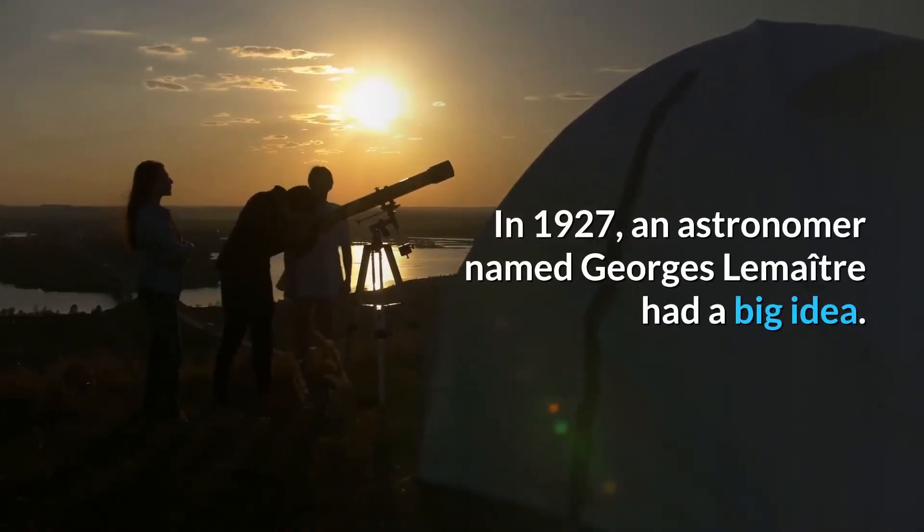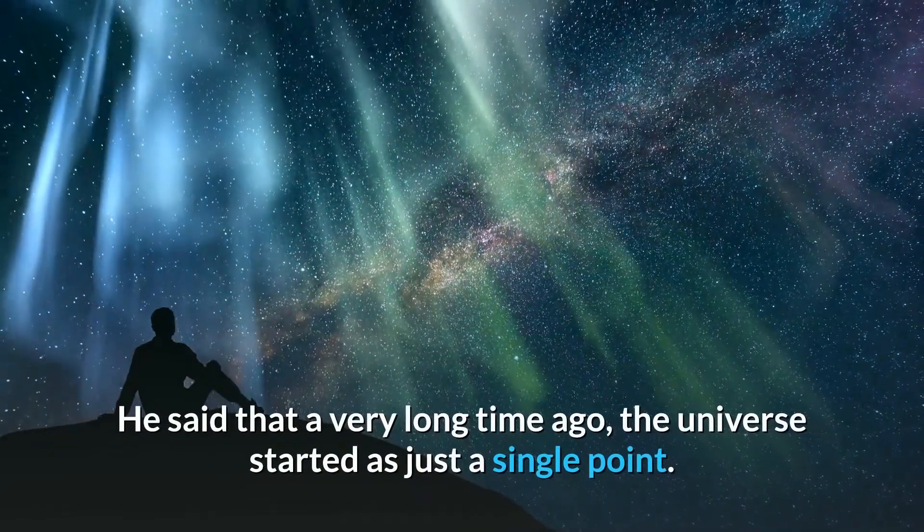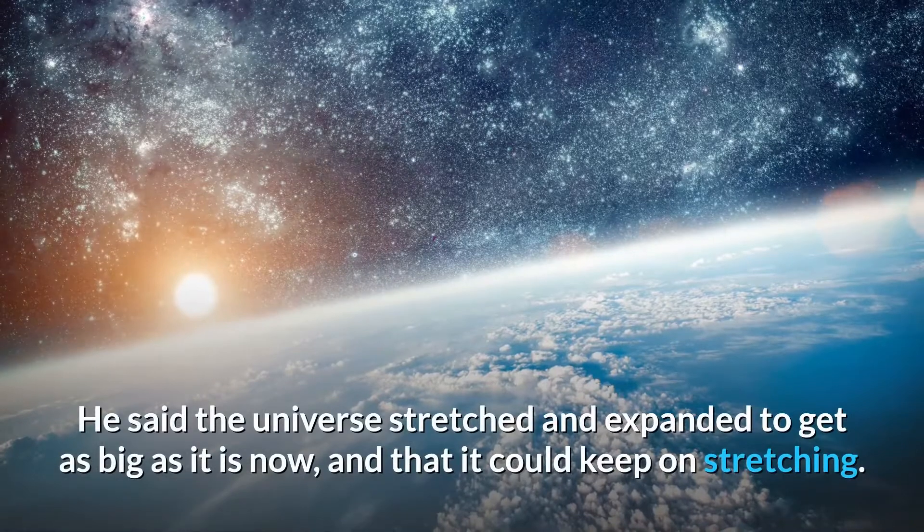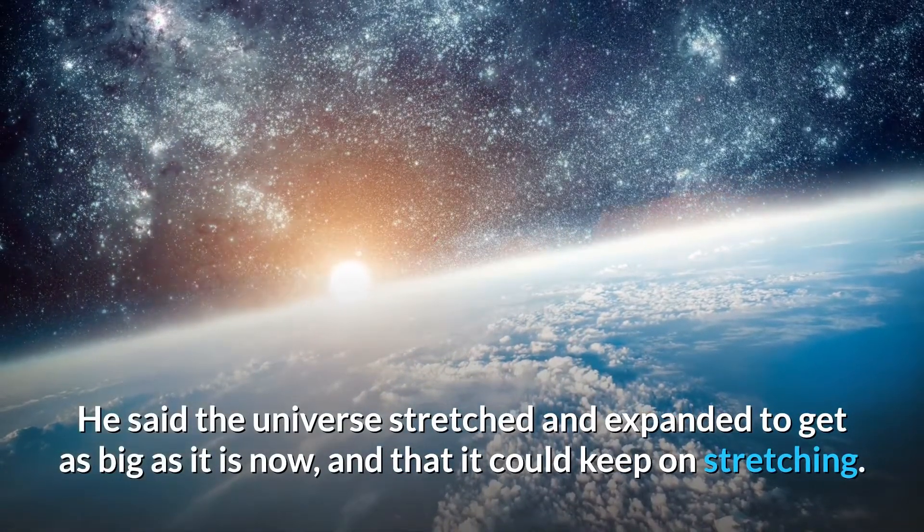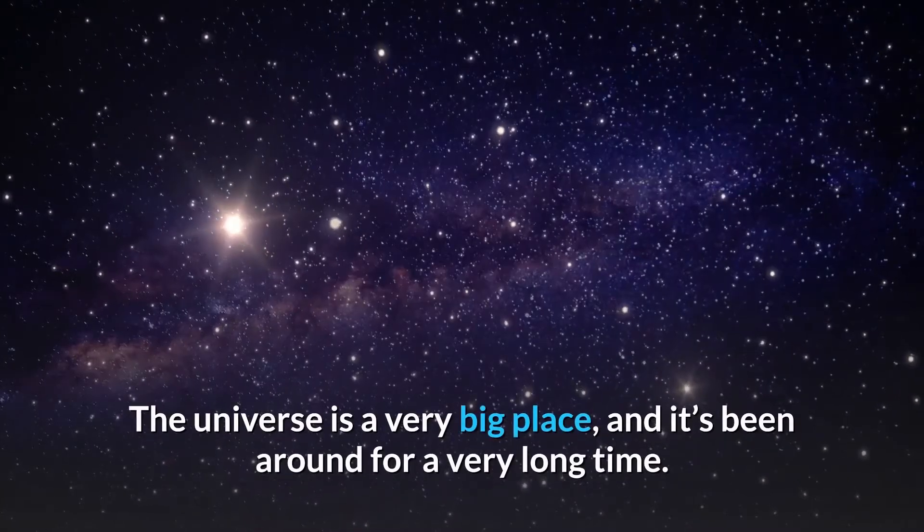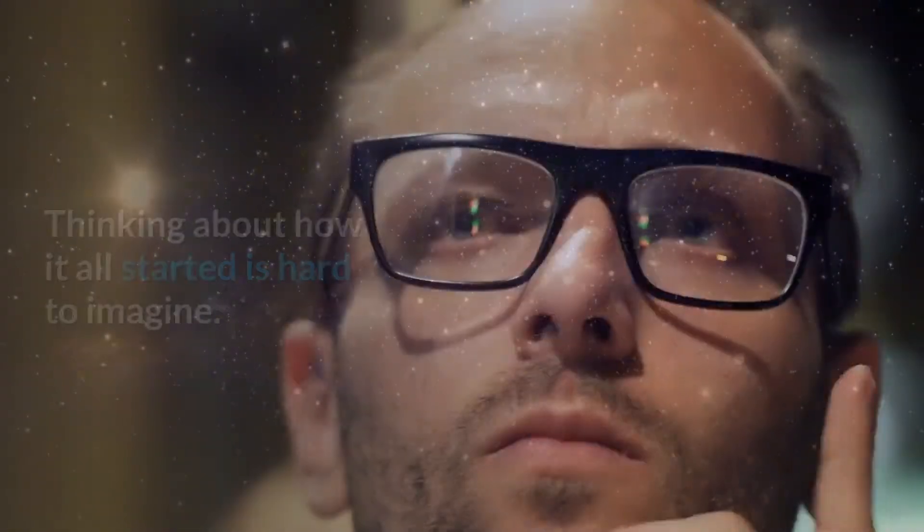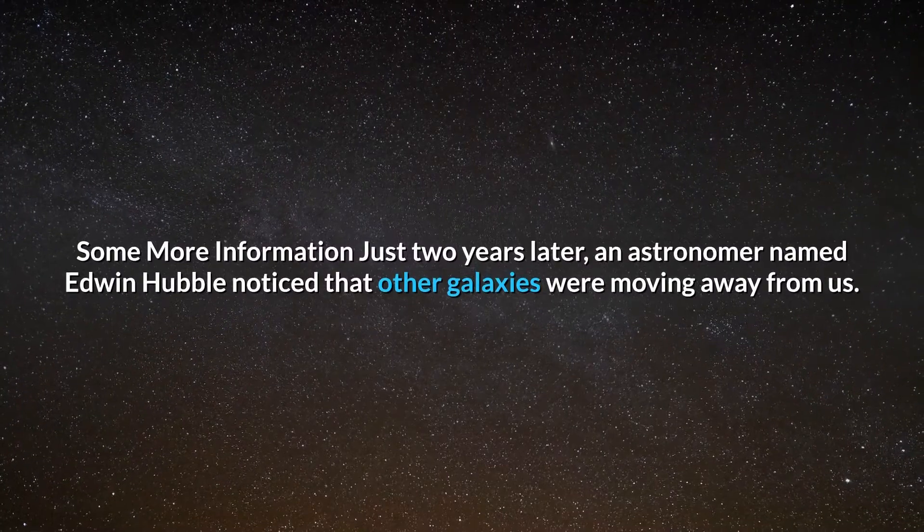In 1927, an astronomer named George Lemaitre had a big idea. He said that a very long time ago, the universe started as just a single point. He said the universe stretched and expanded to get as big as it is now, and that it could keep on stretching. What an idea! The universe is a very big place and it's been around for a very long time. Thinking about how it all started is hard to imagine.